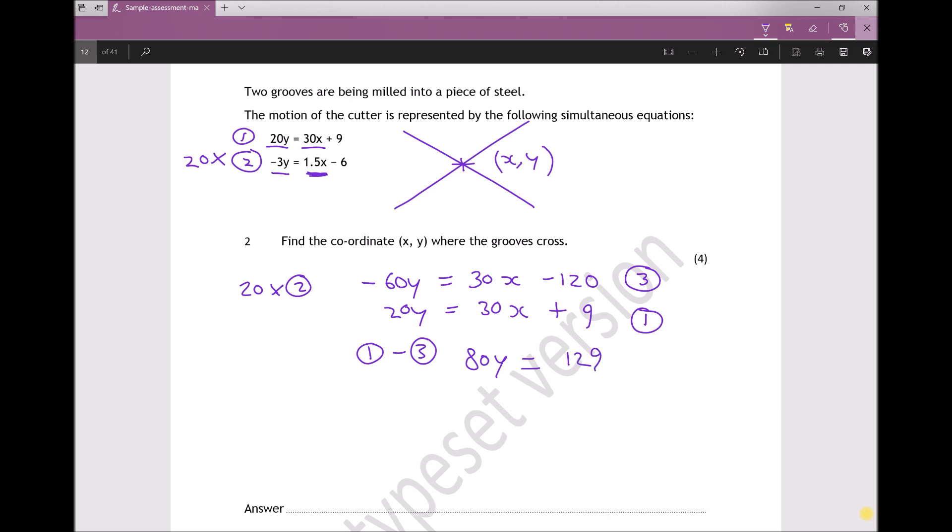Now all I'm left with is a simple linear equation: 80y equals 129. If I divide each side by 80, I'll just get y equals 129 over 80, which equals 1.6125. So I've found my y coordinate for this unique point where the two lines cross. All I need to do now is find my x coordinate. Now here's the important thing: I can use any of the equations - I could use equation 1, I could use equation 2, I could even use equation 3. What I'll be looking to do is substitute in my value for y, and the only unknown remaining will be x.